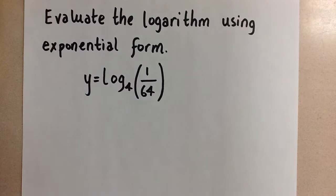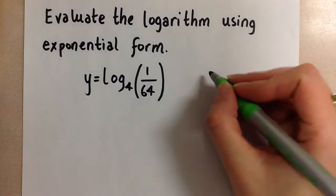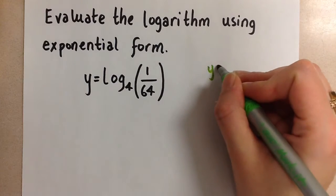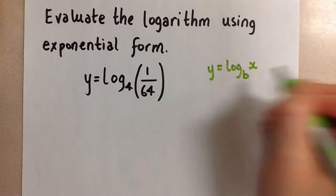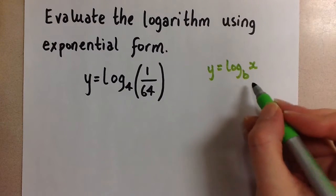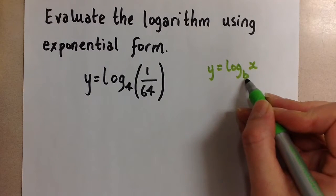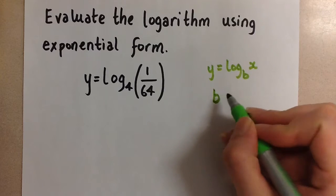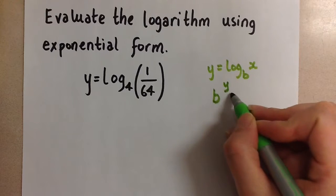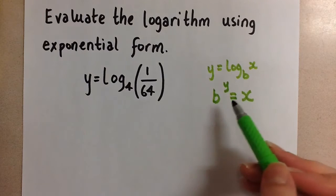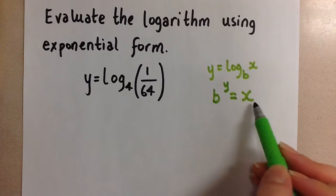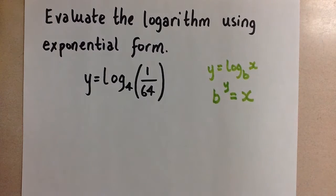So just to remind ourselves, if we have this logarithmic form, y equals the log of x to the base b, we change it to the exponential form by doing the base b to the power of y equals x. So we say, to what power do I have to raise the base b to get the x value from the logarithm?